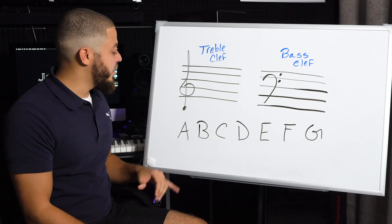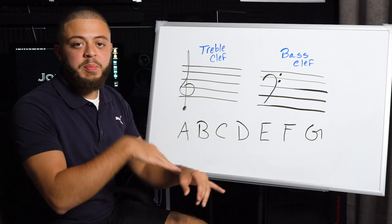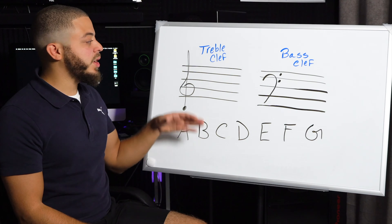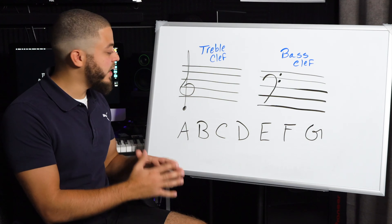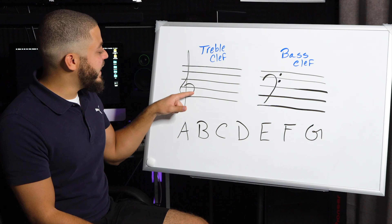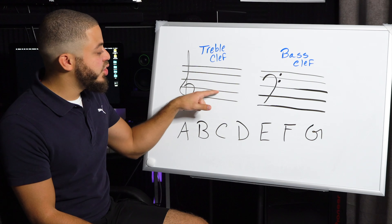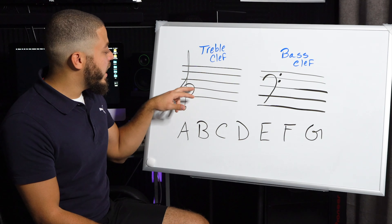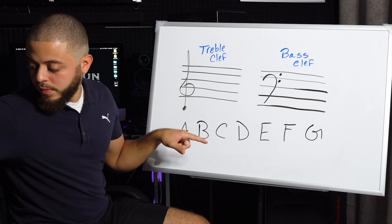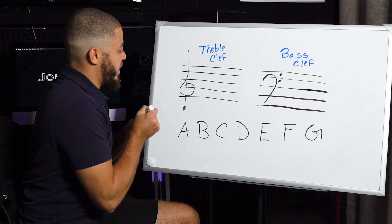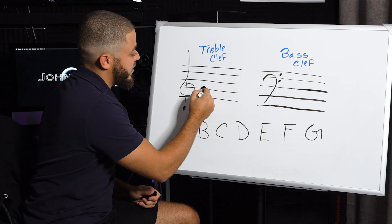The music alphabet has seven letters — A, B, C, D, E, F, G — and then it repeats back on A. So we're going to look at the treble clef, which is also called the G clef because the belly of the treble clef is on G here. So if this note is G, we know that a note written here is the note G.